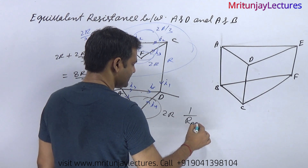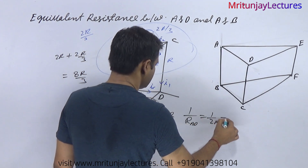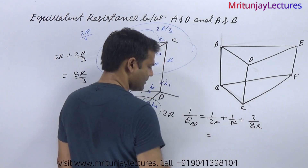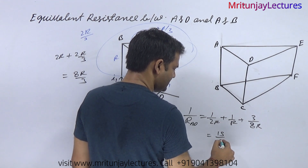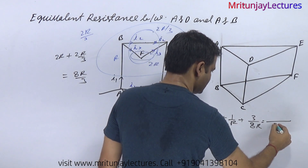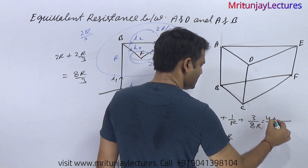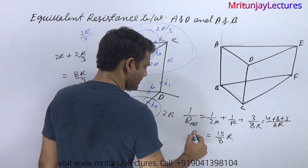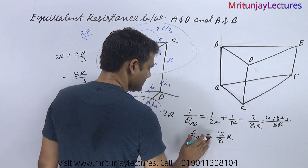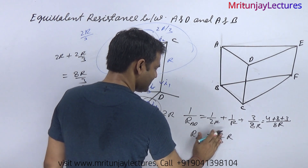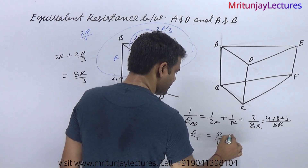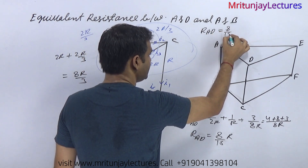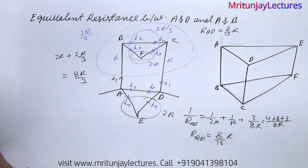So 1/R_AD equals 1/2R plus 1/R plus 3/8R, which gives 15/8R. Therefore R_AD equals 8R/15. Let's verify: 4R plus 8 plus 3 — clear. So R_AD equals 8R/15, which is the final answer.